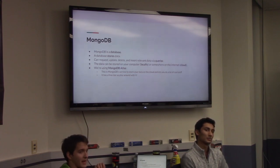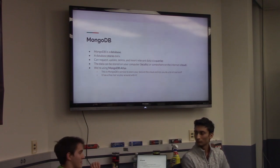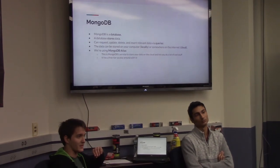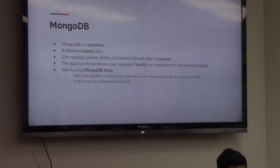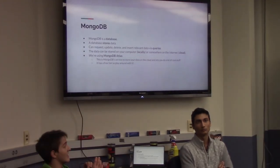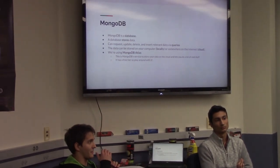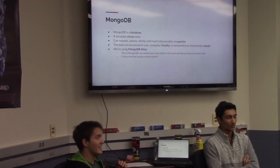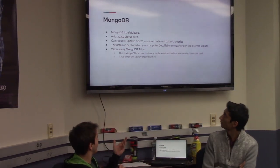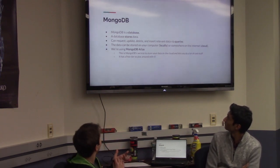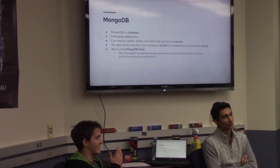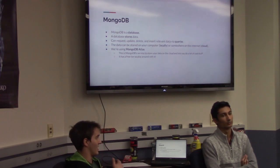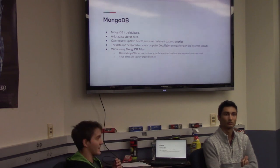Another thing we're going to need is a means to store our data. With Flask, we can handle HTTP requests, but we'll need somewhere to store data so we can access it whenever. A database is where that comes into play. A database at its core is technology that stores data and provides some sort of query language to access the data quickly. The database we're going to be using today is MongoDB. Depending on how you set it up, a database can be run locally on a commodity server or somewhere on the internet in the cloud.